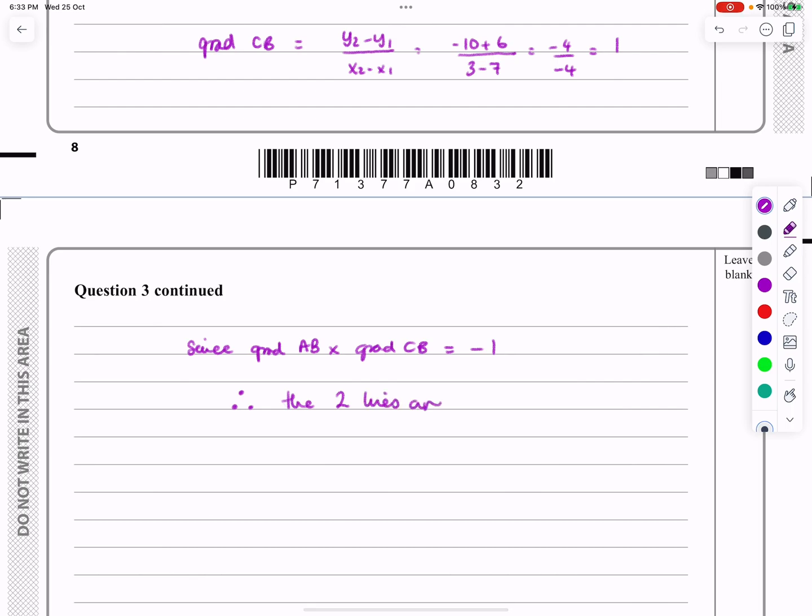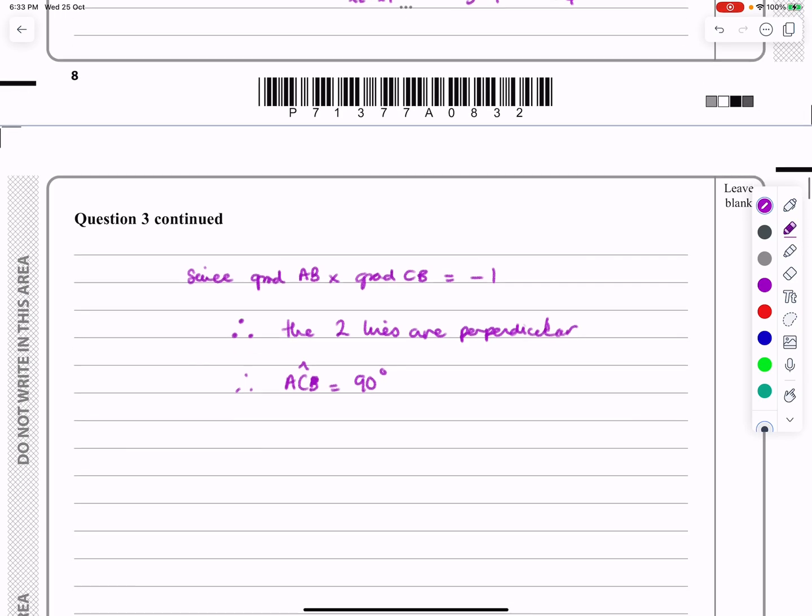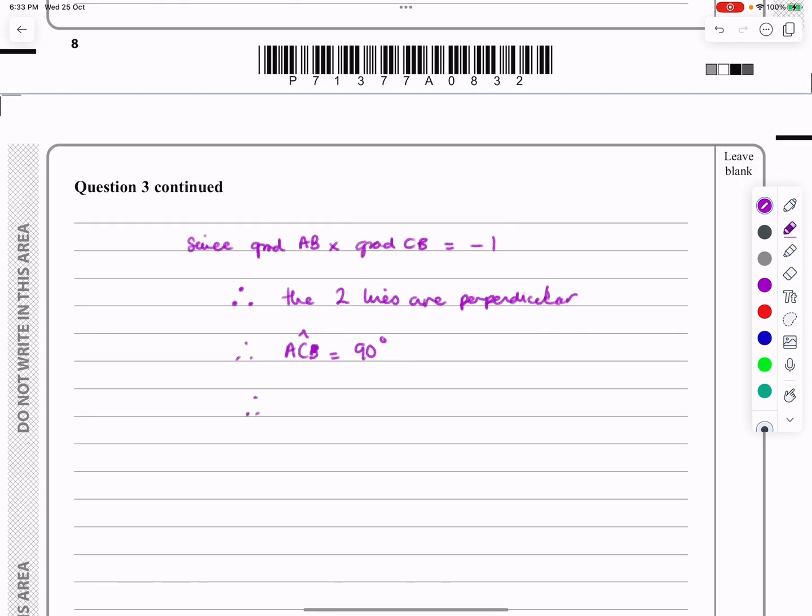I'm going to need to start writing there. Therefore, ACB is equal to 90 degrees. Therefore, AB is a diameter.